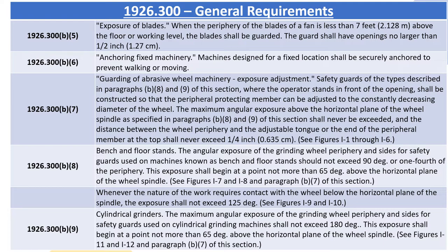1926.300(b)(8) Bench and Floor Stands: The angular exposure of the grinding wheel periphery and sides for safety guards used on bench and floor stands should not exceed 90 degrees, or one-fourth of the periphery. This exposure shall begin at a point not more than 65 degrees above the horizontal plane of the wheel spindle. Whenever the nature of the work requires contact with the wheel below the horizontal plane of the spindle, the exposure shall not exceed 125 degrees.